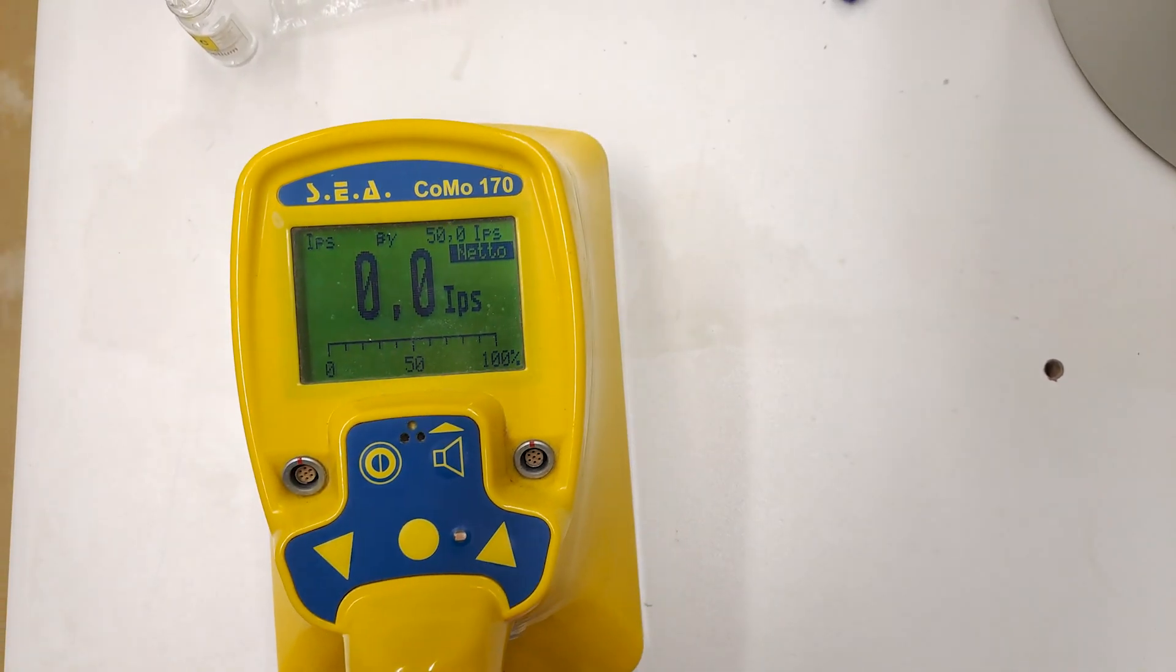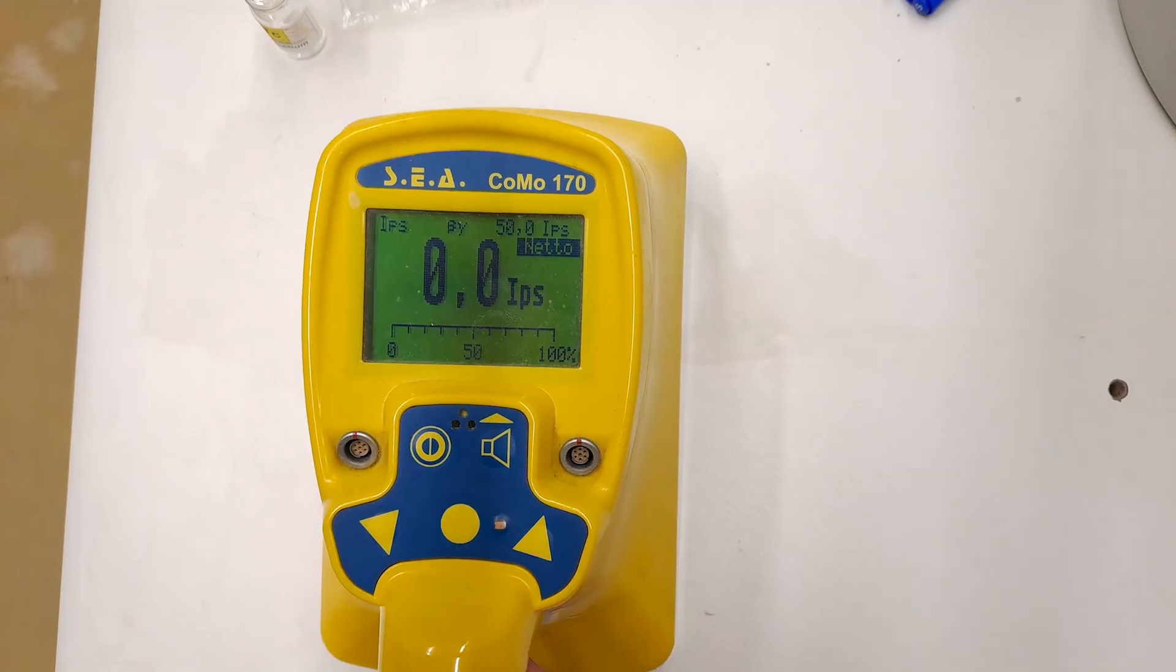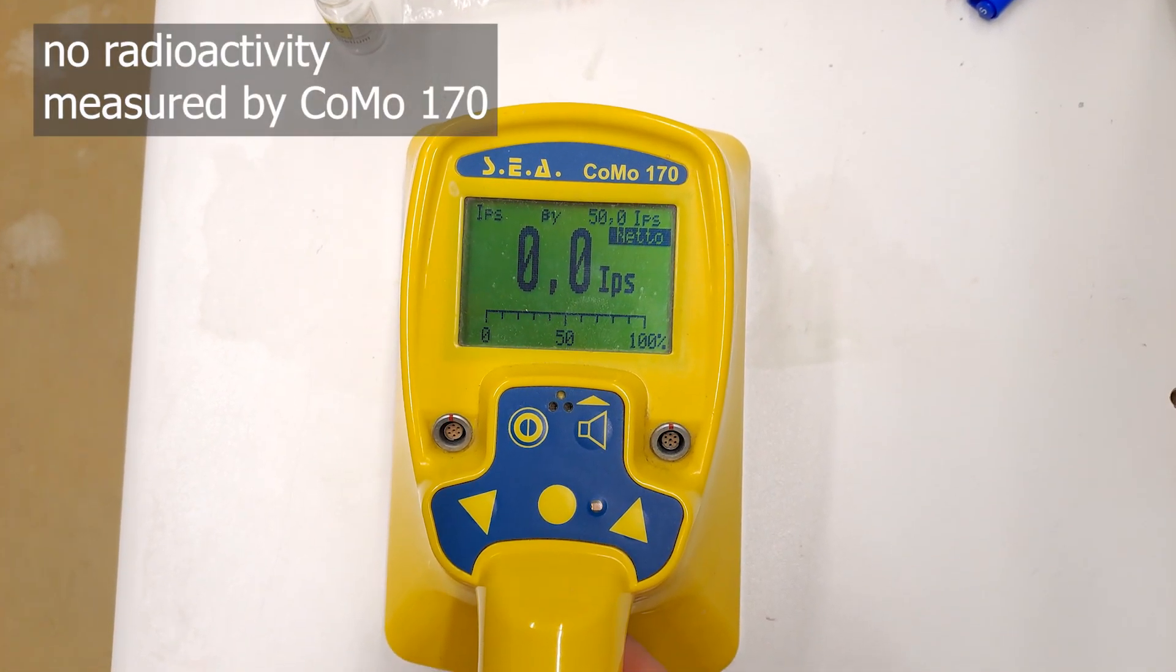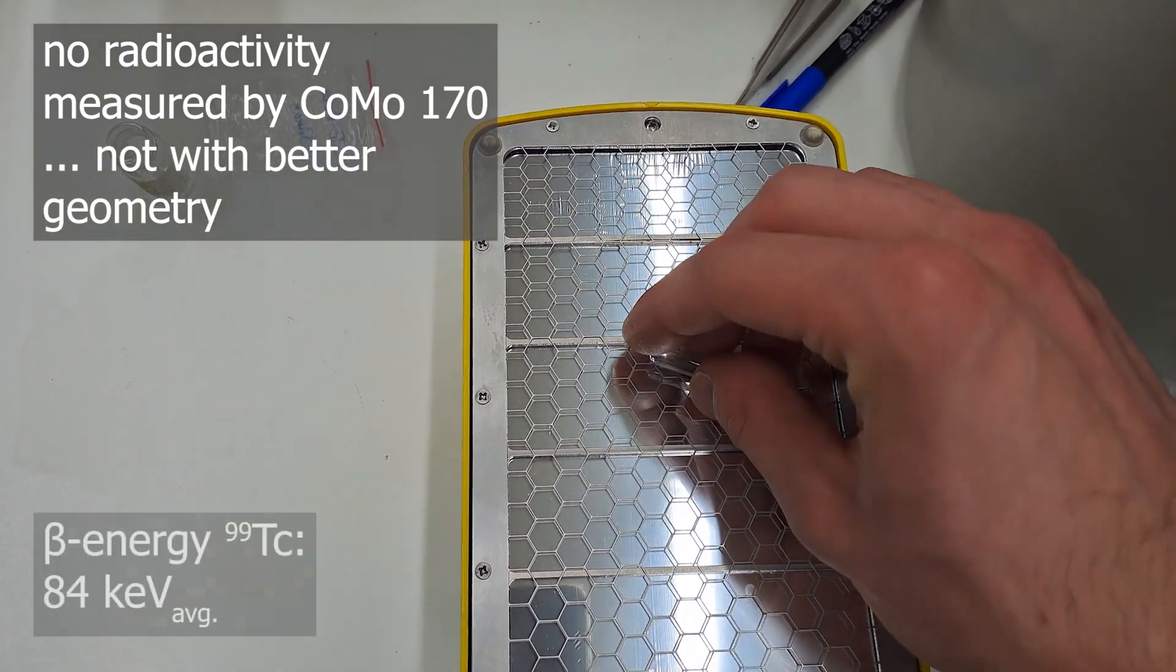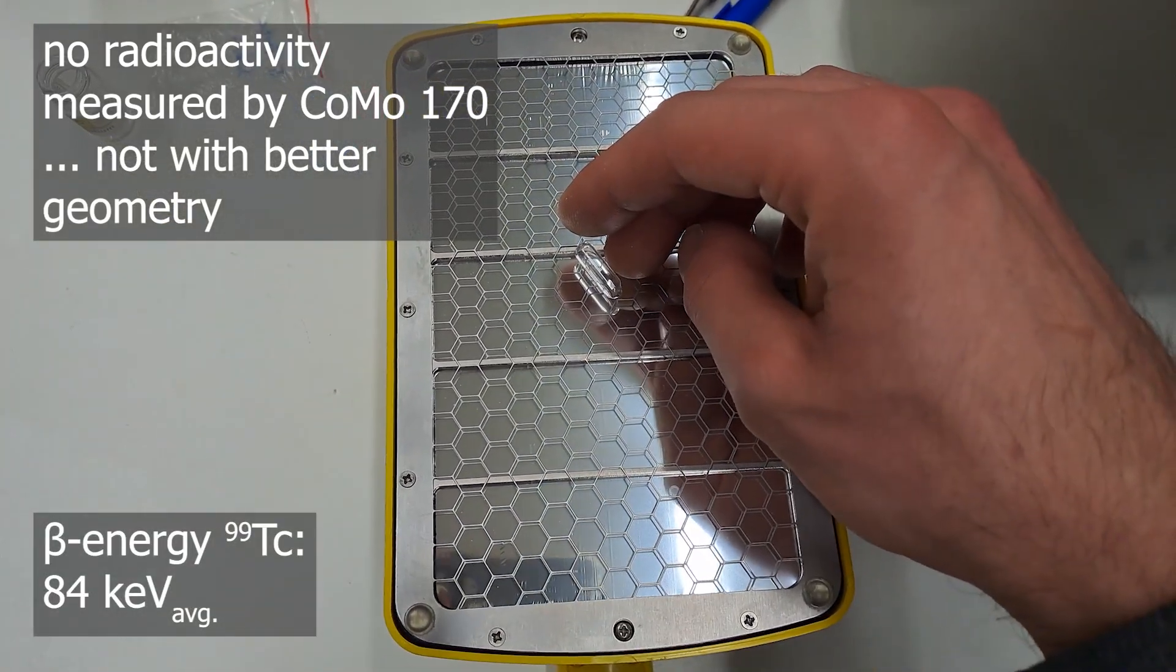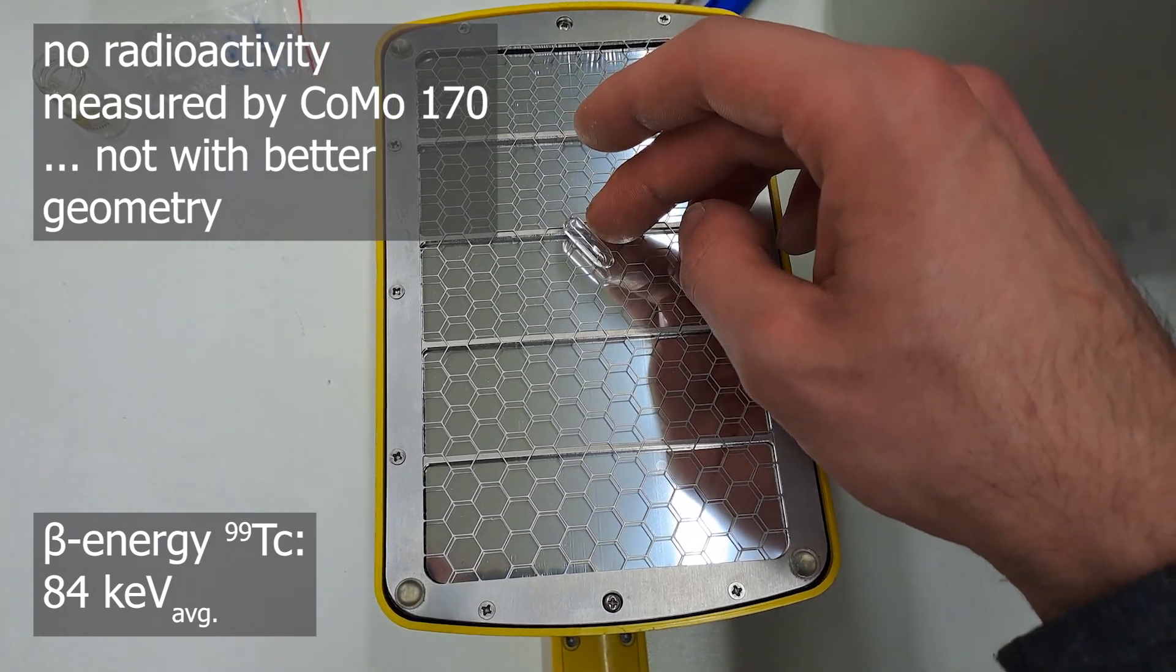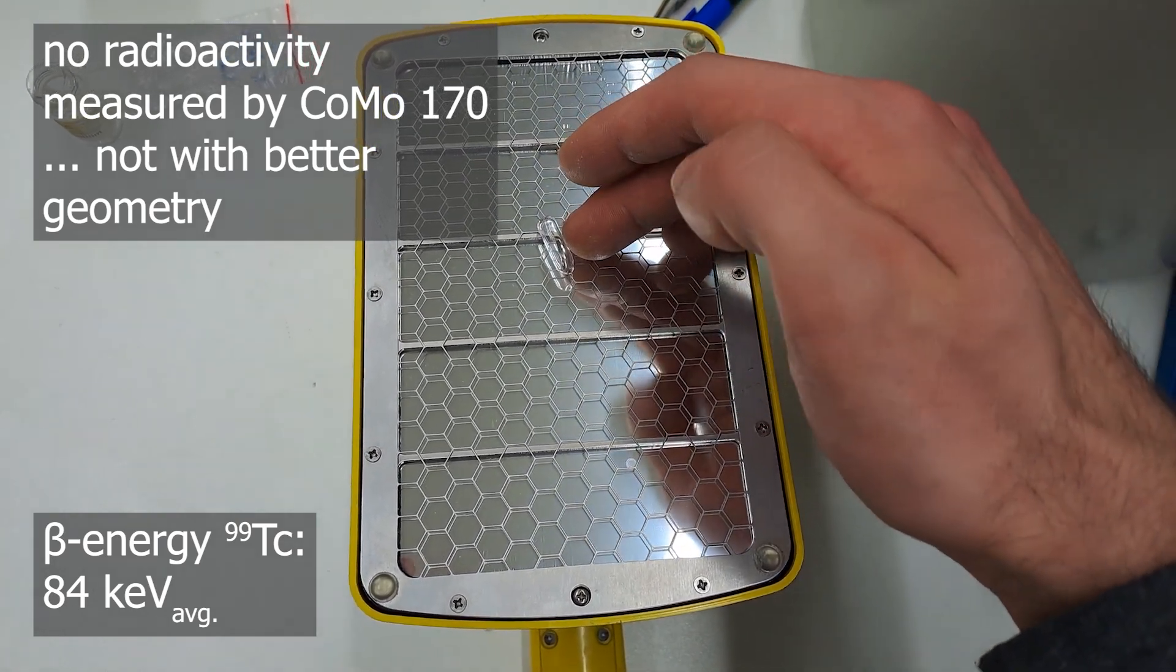Okay, technetium is radioactive, so let's test it with the COMO-170. And through the glass vial, absolutely nothing comes through. This shouldn't be surprising either, because the beta energy of technetium is only about 84 kiloelectronvolts on average. No matter how much you have, it would be easily shielded by the glass. Okay, so now we are not talking about megabecquerel's amount.